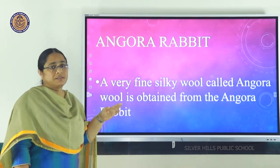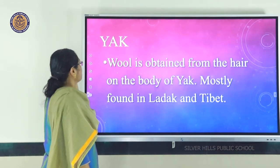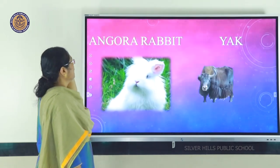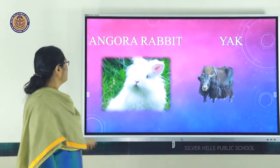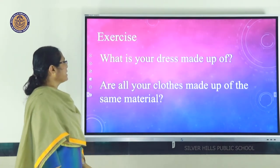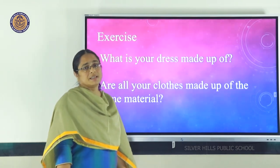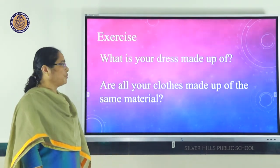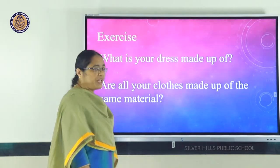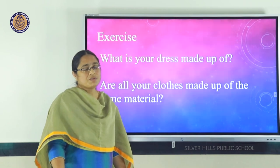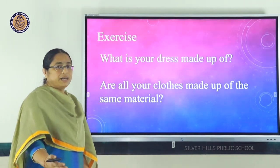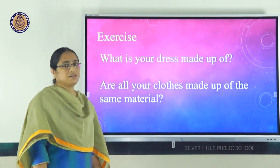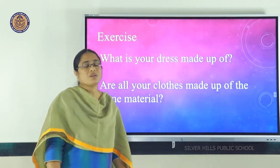Finally, we also get wool from Yak, which is found mostly in Ladakh and Tibet. So, what is your dress made up of? Which material and fiber is used to make your dress? Are all your clothes made of the same material? Of course not. We use different types of fibers — animal fibers, plant fibers, and synthetic fibers.